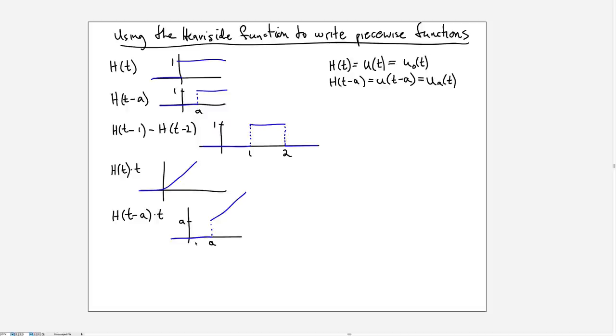What if we wanted an actual ramp that started off 0 up until a and then gradually increased? We'd have to shift both the Heaviside and the function we're multiplying it by. We would have 0 up until a, and then right at a as we start getting a non-zero value from the Heaviside, we would start at 0 with t minus a which would increase linearly from that point.